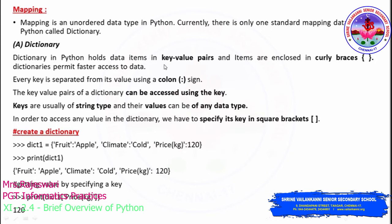The data items in a dictionary are in the form of key-value pairs. For example, 'fruit' is the key and 'apple' is the value. In lists and tuples you can give any kind of data type, but in a dictionary you provide all data items as key-value pairs. This helps you access data much faster compared to other data types.